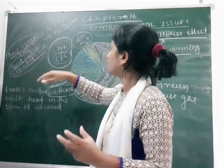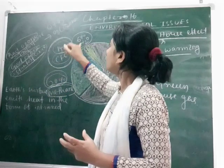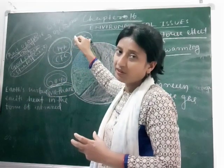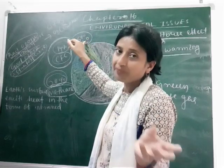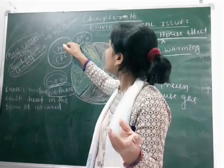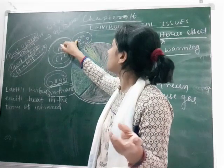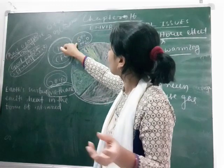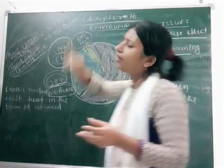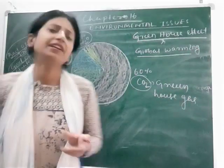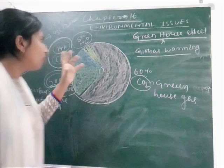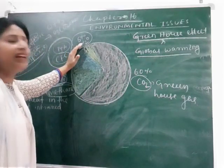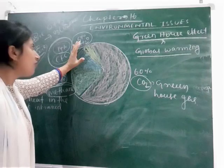Nitrous oxide is a major vehicular pollutant that we studied in the last class. It is released from vehicles as well as from chemical industries, and is also a major component causing global warming. Together, greenhouse gases combiningly cause global warming.